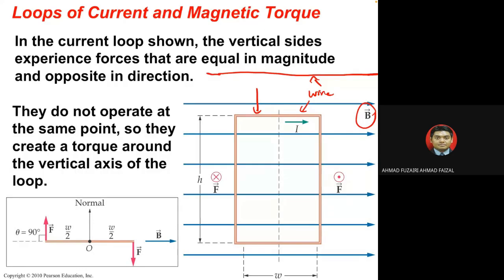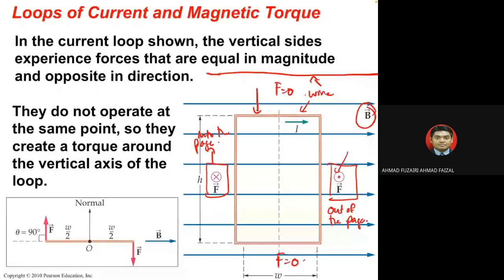Looking at the forces on the rectangular loop: on one side, F is out of the page; on the opposite side, F is into the page. On the top and bottom sides, F is zero because sin 0° = 0 — since those sides are parallel to B. So F = iLB sin θ gives zero on the top and bottom.